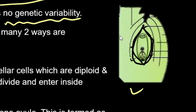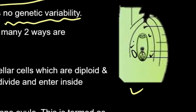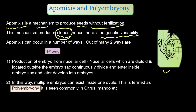In this first form of apomixis, the cells of the nucellus — nucellar cells — are diploid in nature, as they are vegetative cells. These nucellar cells divide continuously, and being present outside the embryo sac, they get inside the embryo sac.